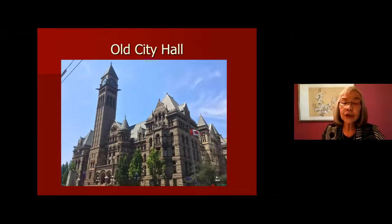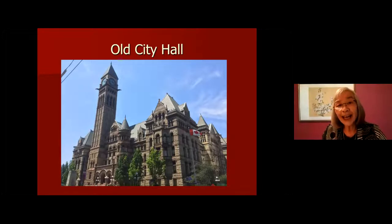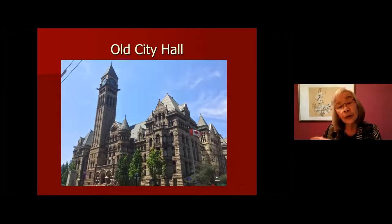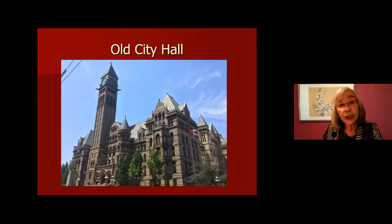Here we are at the corner of Bay and Queen. Why do I start the tour at Old City Hall? Three reasons. The first is that the very first Chinese recorded in the City of Toronto directory is a man named Sam Ching. He had a Chinese laundry at 9 Adelaide Street East, not far from this site. If you walk in that area, the building is gone — it's all high-rise — but there is a laneway called Ching Lane, named after Sam Ching, the first Chinese recorded in Toronto.